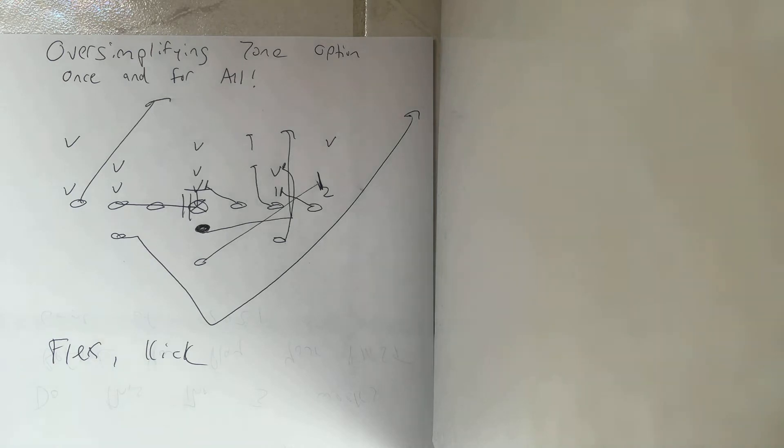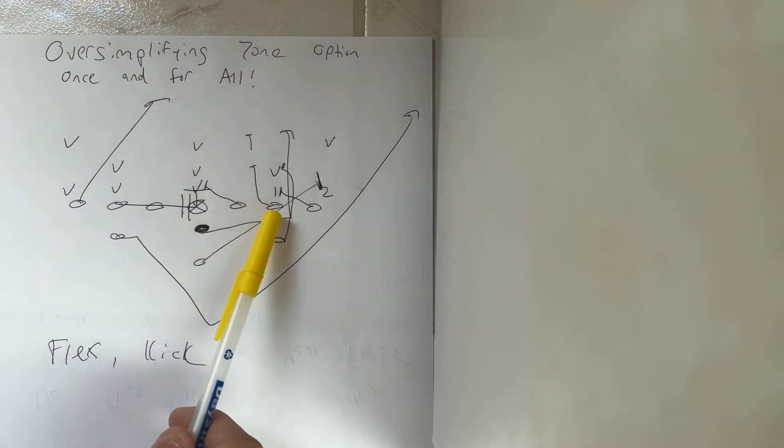And here's what's happening. Again, the receiver, his job is block whoever's in the C gap. If there's nobody in the C gap, there's no 4, 5, 7 technique, then he veers. The tackle has the B gap. If there's no 2, 3, or 4 eye, he veers.